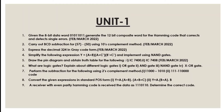Explain OR gate, AND gate, and XOR gate. Next question: Perform the subtraction using 2's complement method: 11000 − 1010 and 111 − 11100. Convert the given expression to standard POS form: Y = A(A + B)(A + B + C).